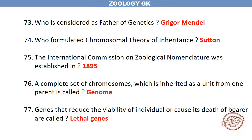The vapor theory of inheritance was put forward by Pythagoras. Who is considered the father of genetics? Gregor Mendel. Who formulated the chromosomal theory of inheritance? Sutton. The International Commission on Zoological Nomenclature was established in 1895.